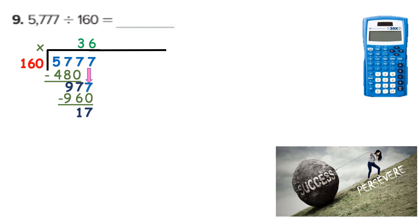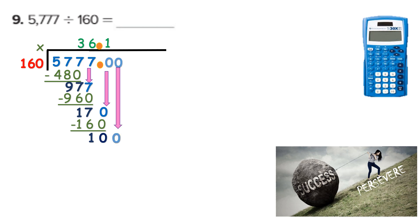When I subtract, I have a remainder of 17. There's nothing else to bring down, so I add my decimal, raise it straight up, add a zero, bring it straight down. 160 will go into 170 just one time. When I subtract, I get a remainder of 10. I add a zero and bring it down. How many times will 160 go into 100? It won't. So I need to hold that place value — 160 goes into 100 zero times. Then I add another zero and bring it down. 1,000 divided by 160 is 6, because 6 times 160 is 960. When I subtract, I get a remainder of 40.